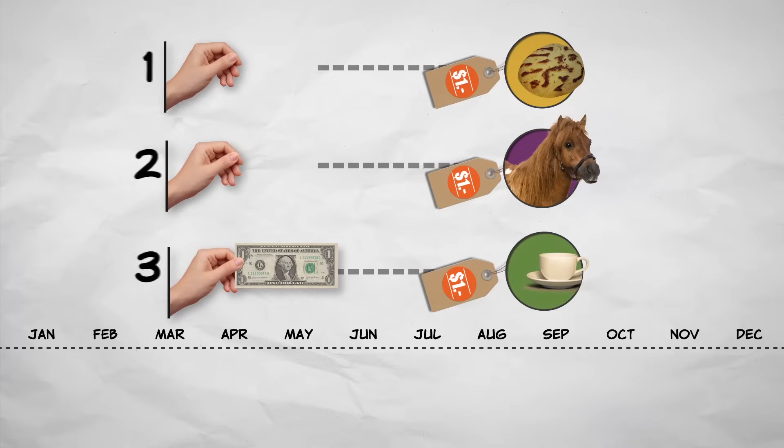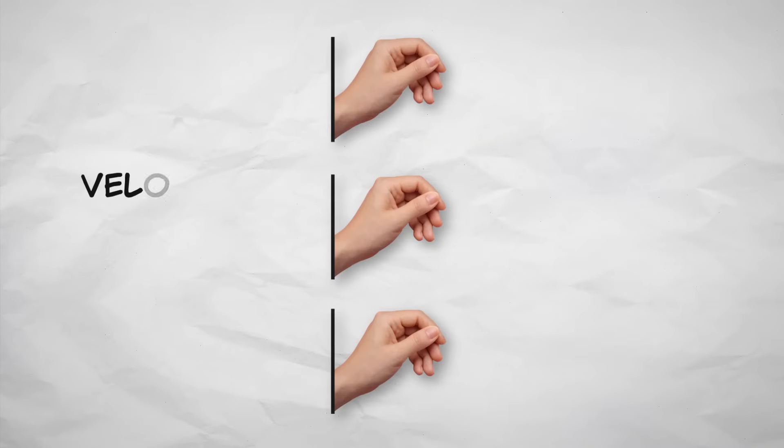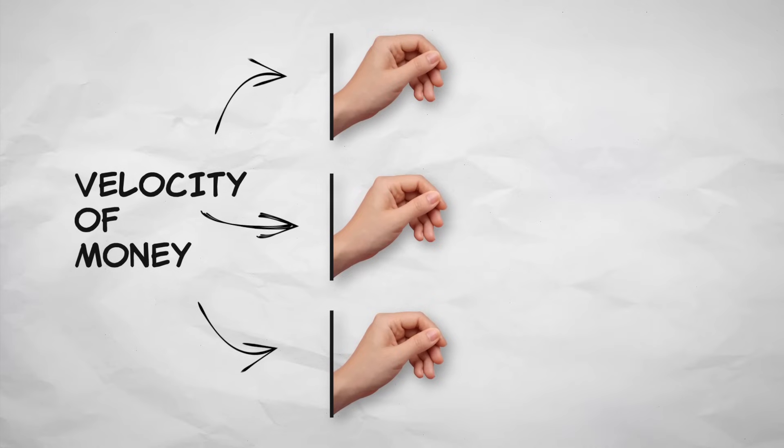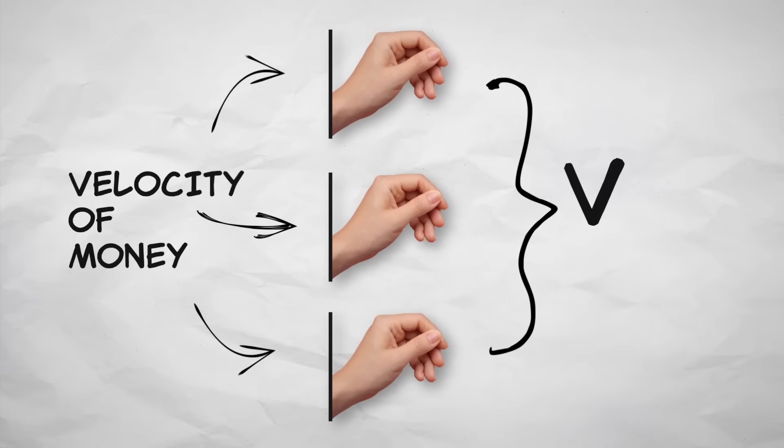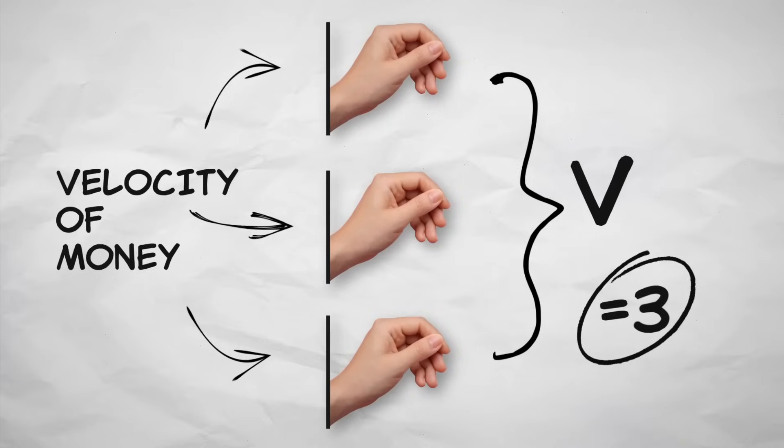Okay, we've got the building blocks to understand the quantity theory of money already. Our dollar bill, well that's money, which we represent with the letter M. How many times that dollar gets used in a year is called the velocity of money, which we'll label with a V. In this case, V is three, as our bill was spent three times in a year.